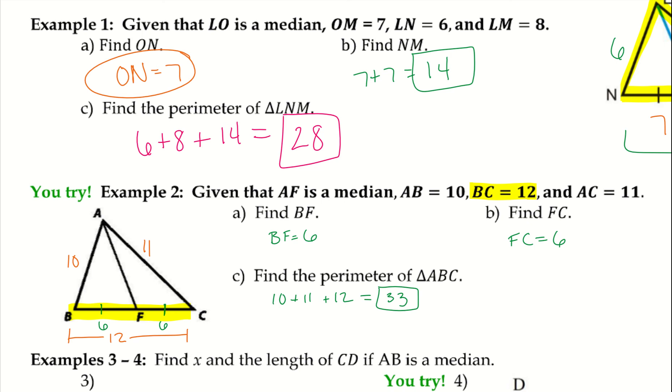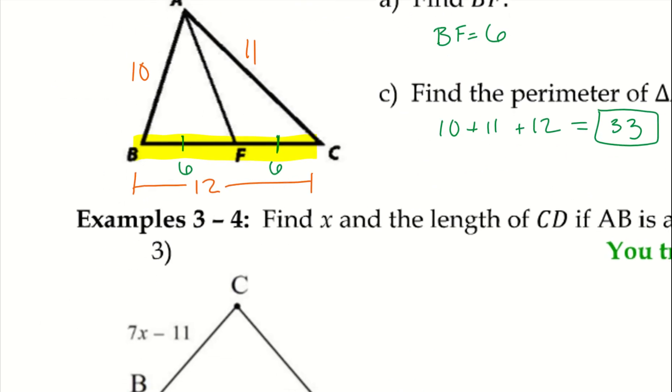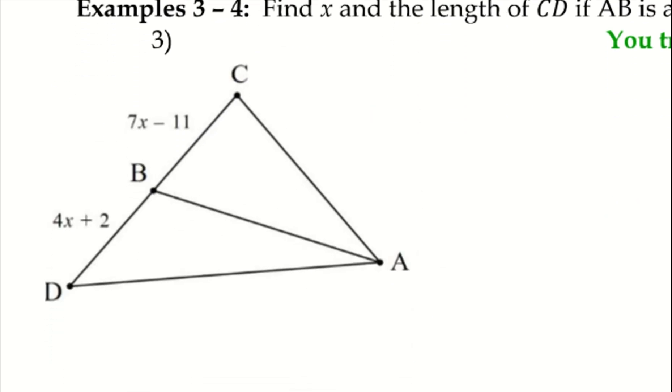Let's try 3 and 4. 4 is a you-try, so I'm going to just focus on number 3 right now. We know that AB is a median. Since we know that AB is a median, it goes from the vertex down to the side. Which means DC is cut in half, so B is the midpoint and CD is cut into two perfectly even pieces. Therefore if we set them equal to each other, we will be able to solve for x.